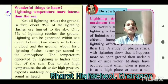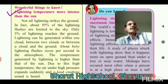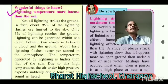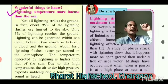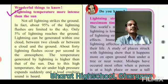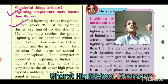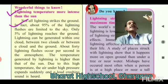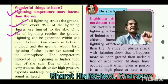The temperature of lightning is more intense than the sun. In fact, about 95% of lightning flashes are limited to the sky, meaning only about 5% of lightning flashes reach the ground.